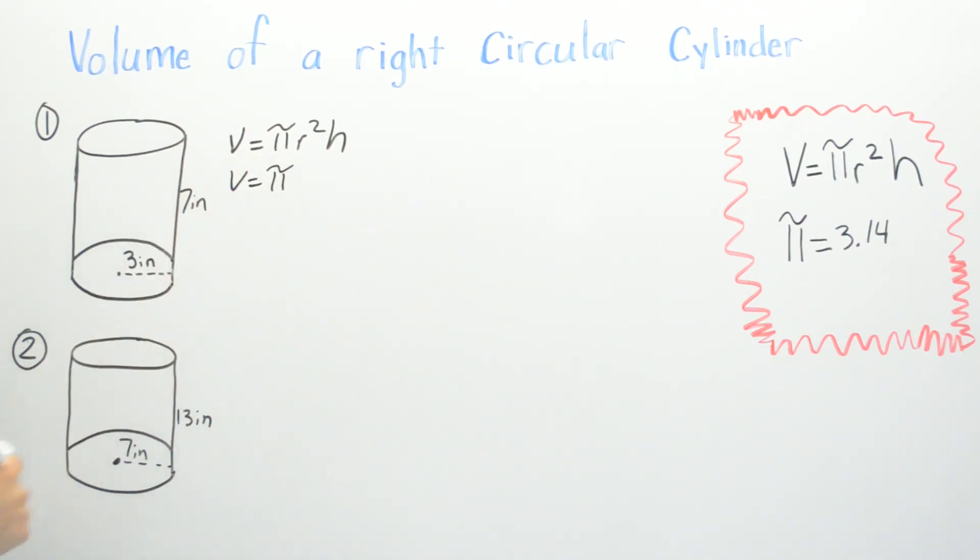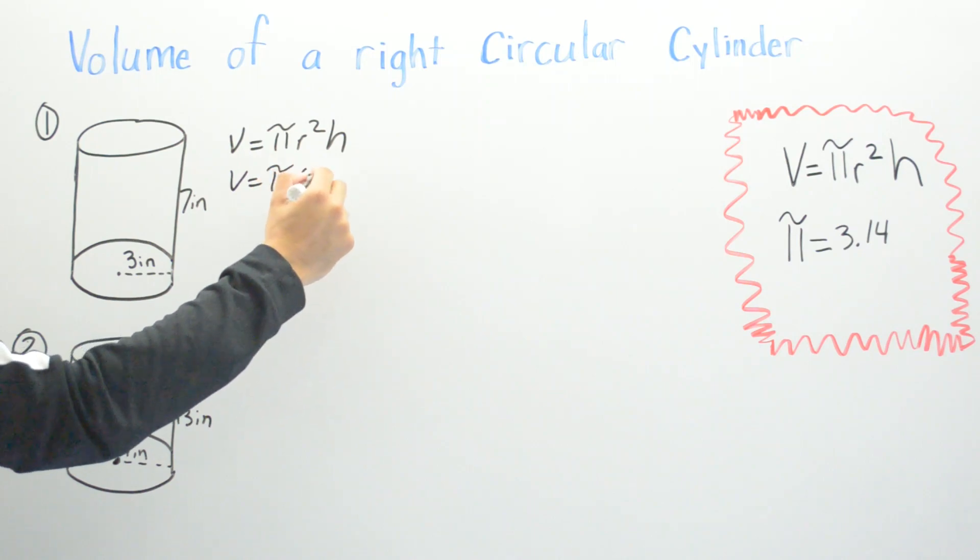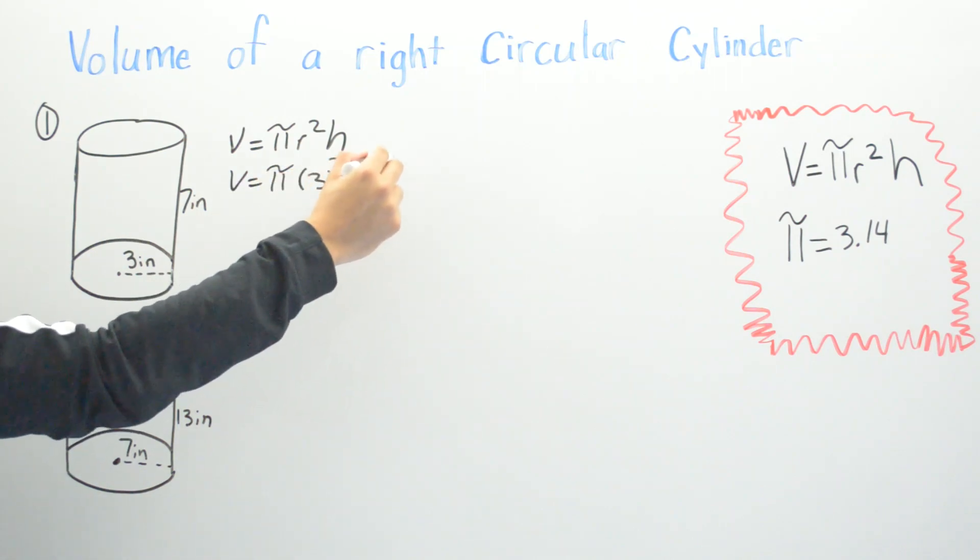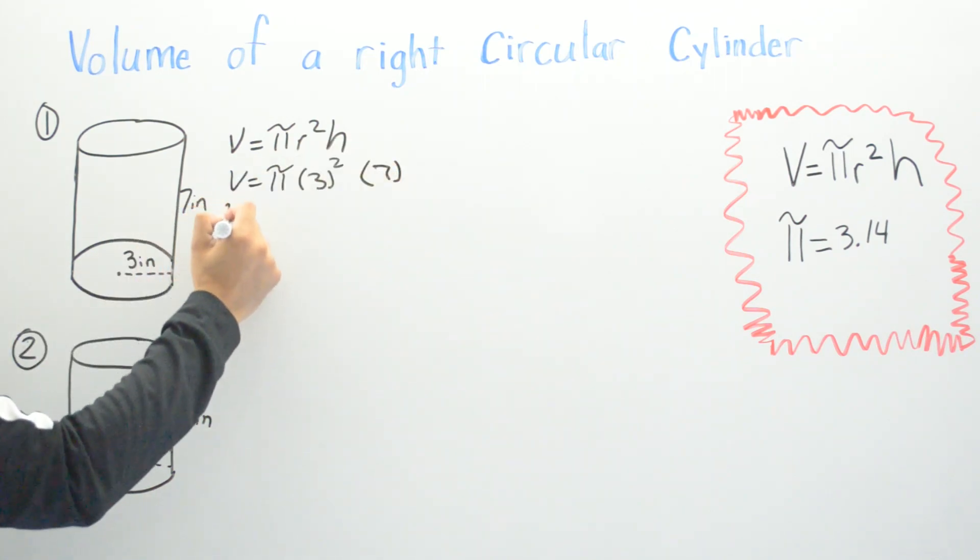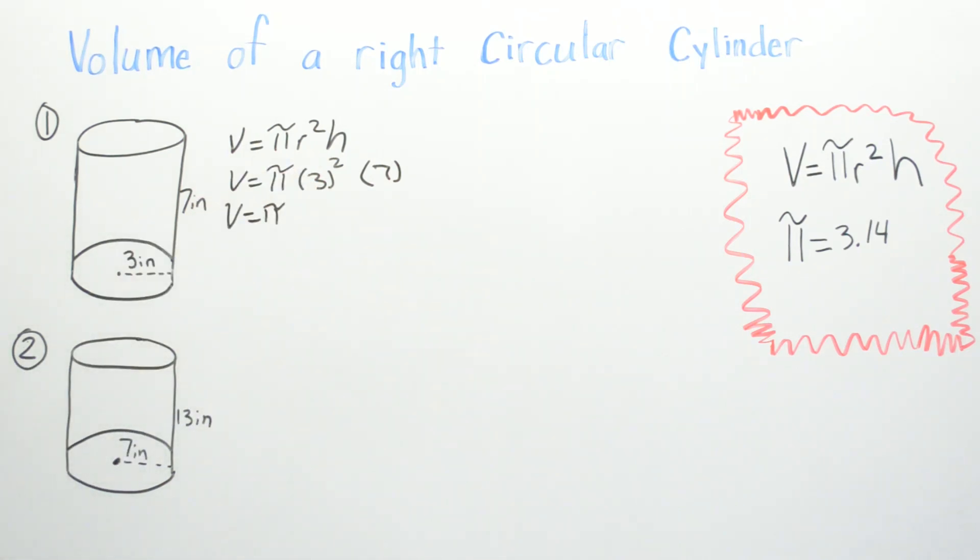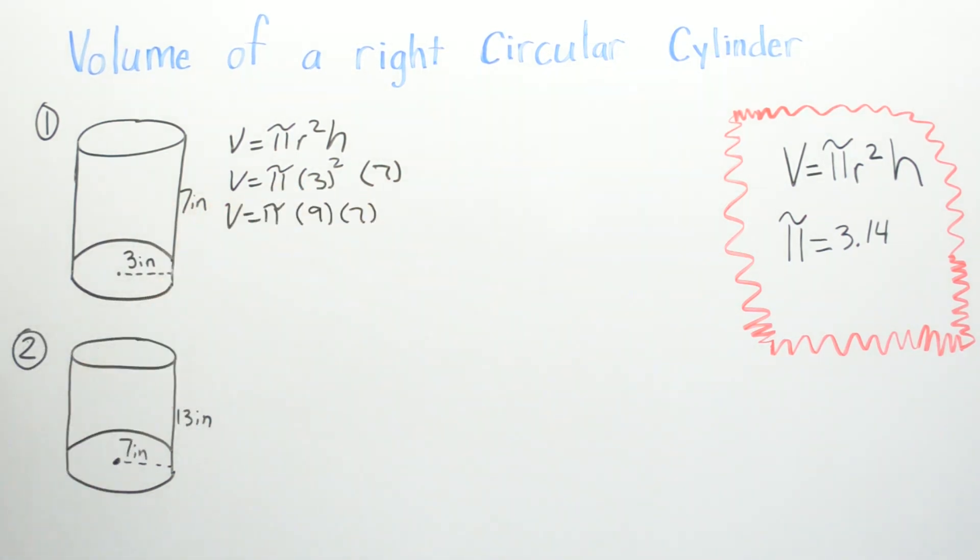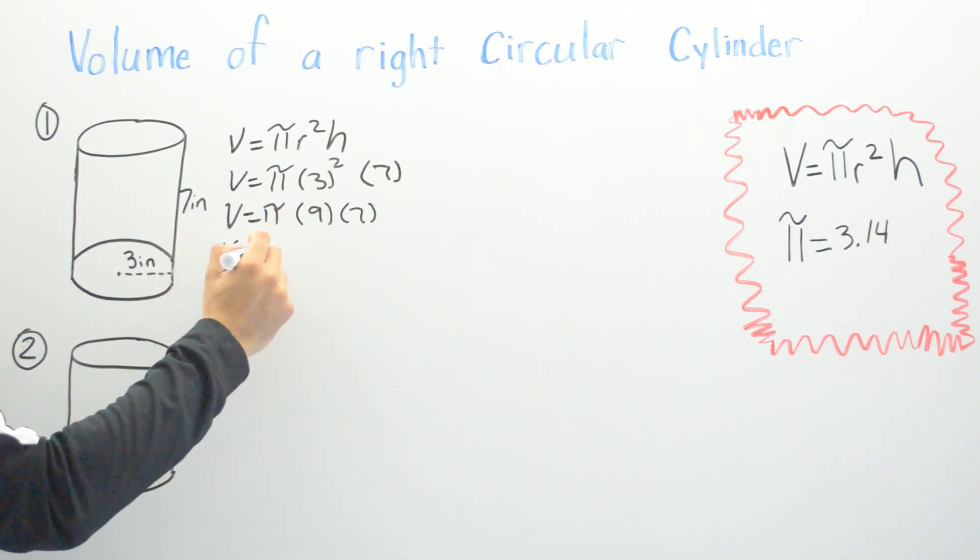Now what our radius is, three, squared, and then times our height which is seven. Then I'm going to go ahead and start solving v equals pi, r, three squared is going to be nine. You can go ahead and skip all these steps, I'm just putting step by step so you guys can know how to do it. After you know how to do it you can skip right away to step three or four, whatever is easier for you. And we have v equals nine times seven would be sixty three pi.